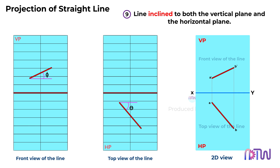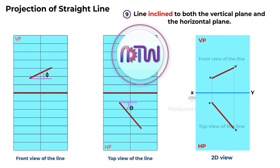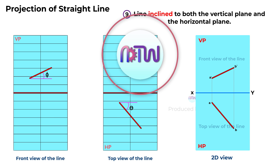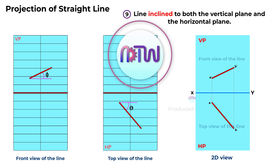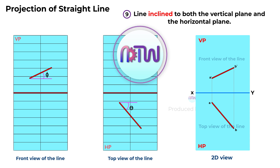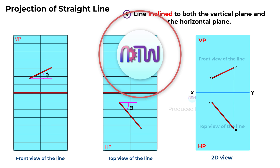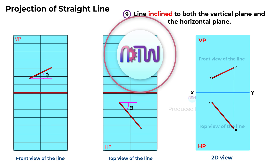In our next video, we will solve problems on how to determine the actual length of the line when it is inclined at an angle to both planes. I trust that this video has provided valuable insights into the various positions where a line can be situated in the first quadrant. If you're eager to delve deeper into engineering drawing, consider enrolling in my comprehensive engineering drawing course — visit adtwstudy.com or click the link in the description below. Don't forget to like, share, and subscribe to my channel for more content.